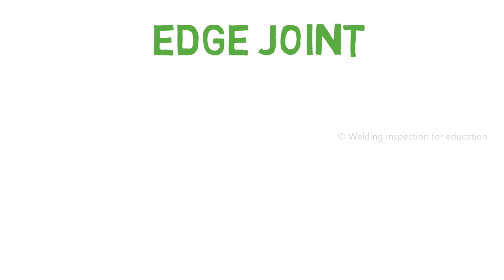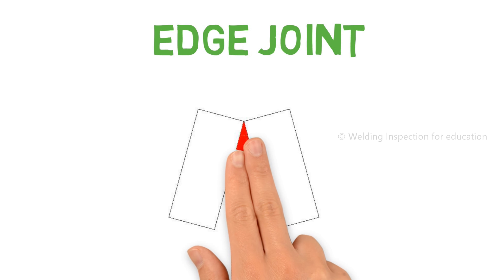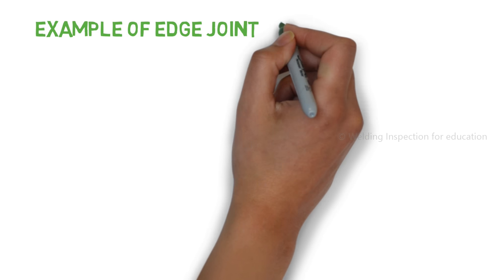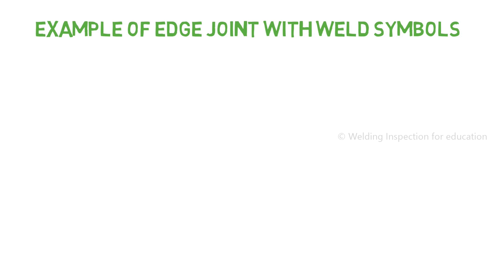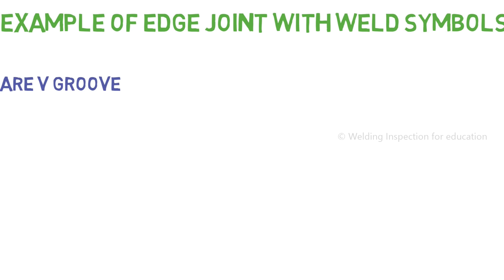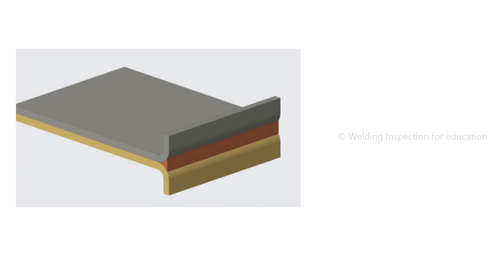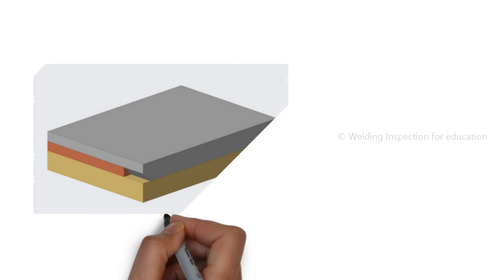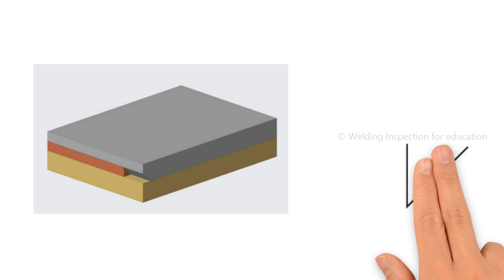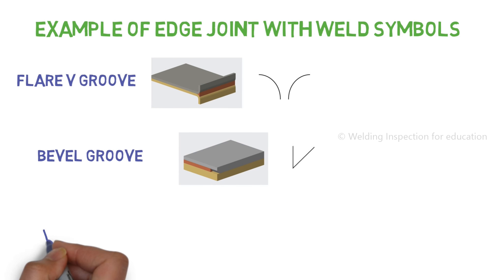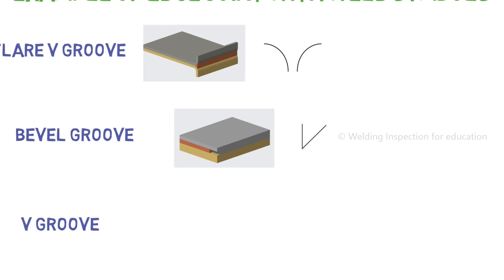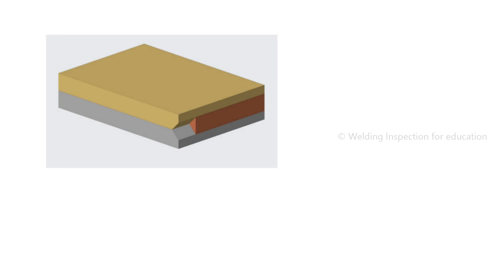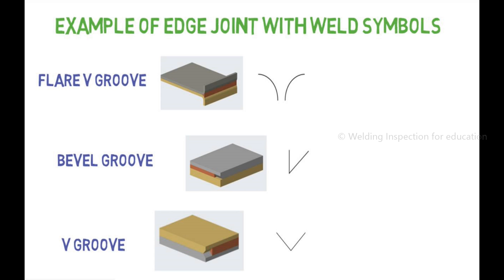Fourth is the edge joint. Edge joint is a connection between two edges — the faces are not matching with each other, but only the edges are matching. First, flare V groove edge joint: two radiuses are touching each other. Second, bevel groove edge joint: two ends of the chamfer are touching each other. Third, V groove edge joint: both surfaces are prepared for the edge joint. Remember, there is no fillet weld possible for the edge joint.